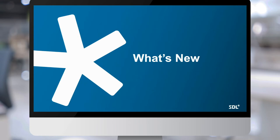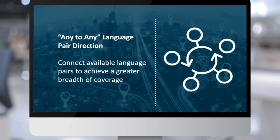I'll share a little preview of what we are working on behind the scenes, leveraging our linguistic AI capability and bringing it into our machine translation products. In terms of what's new, we have released to SDL MT Edge — and it will be coming soon to SDL Language Cloud — a feature that enables users to translate from any to any language pair direction. This feature allows users to connect any available language pairs that SDL offers in our product, so you can chain and create more combinations and get a greater breadth of coverage.